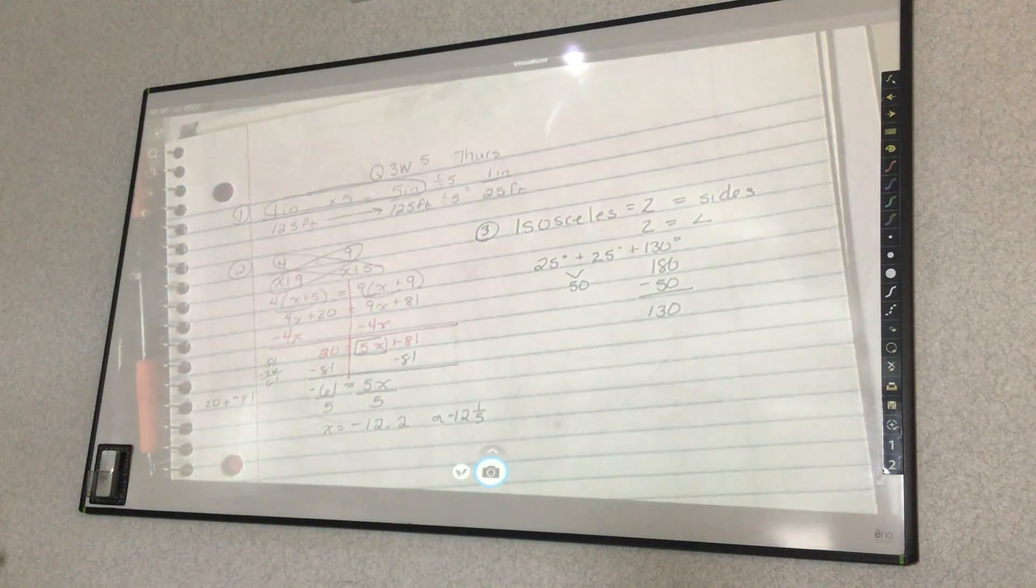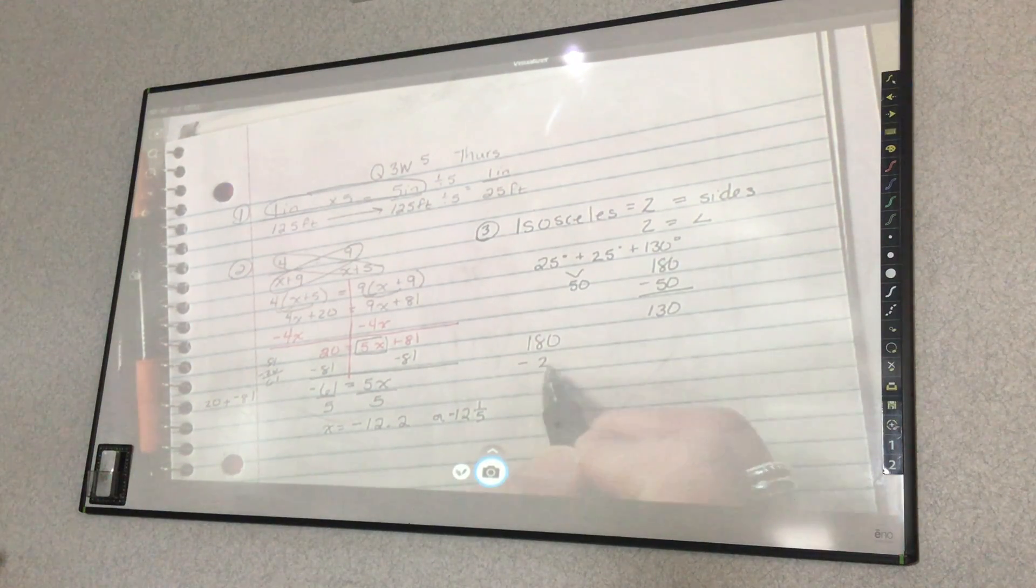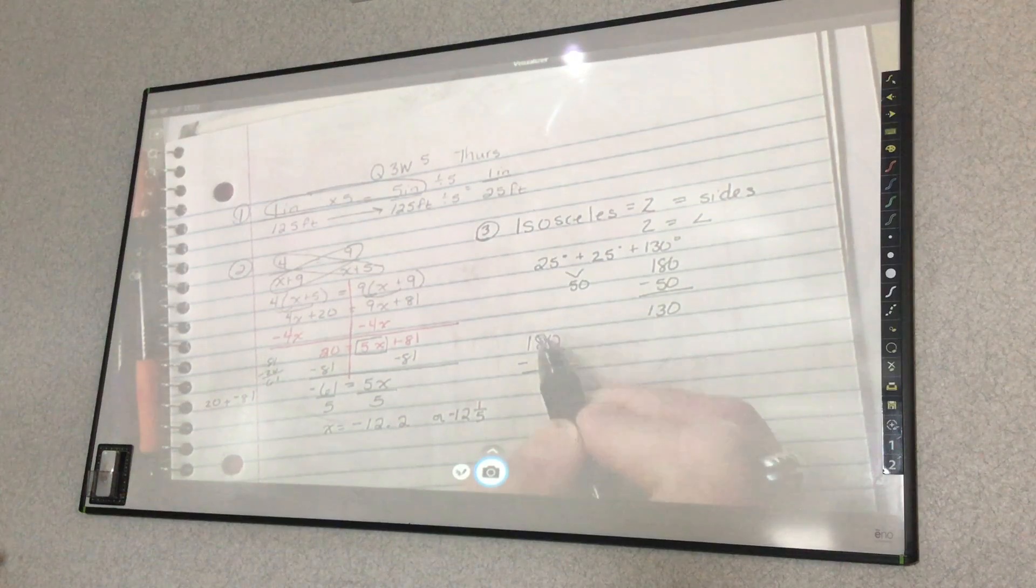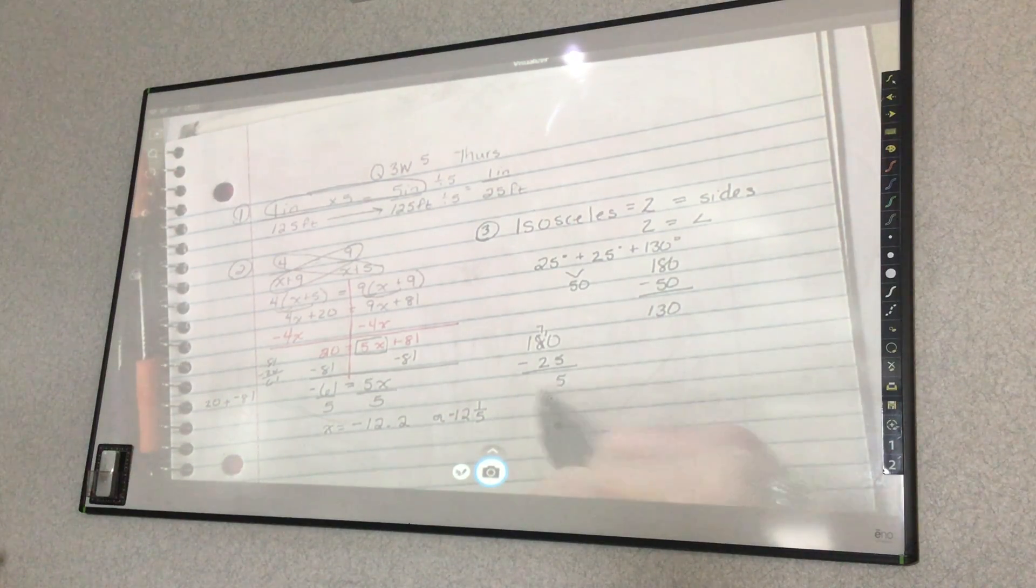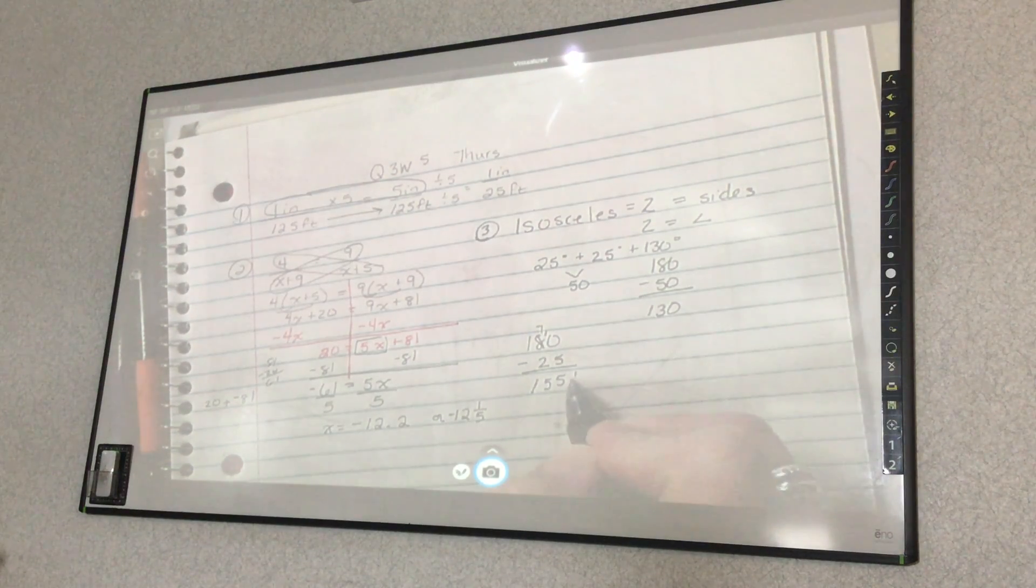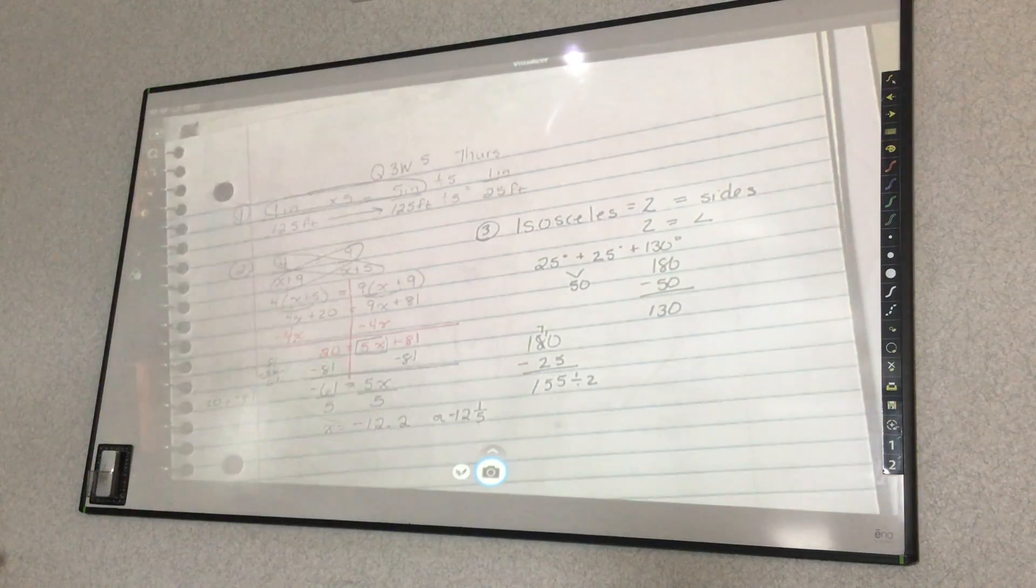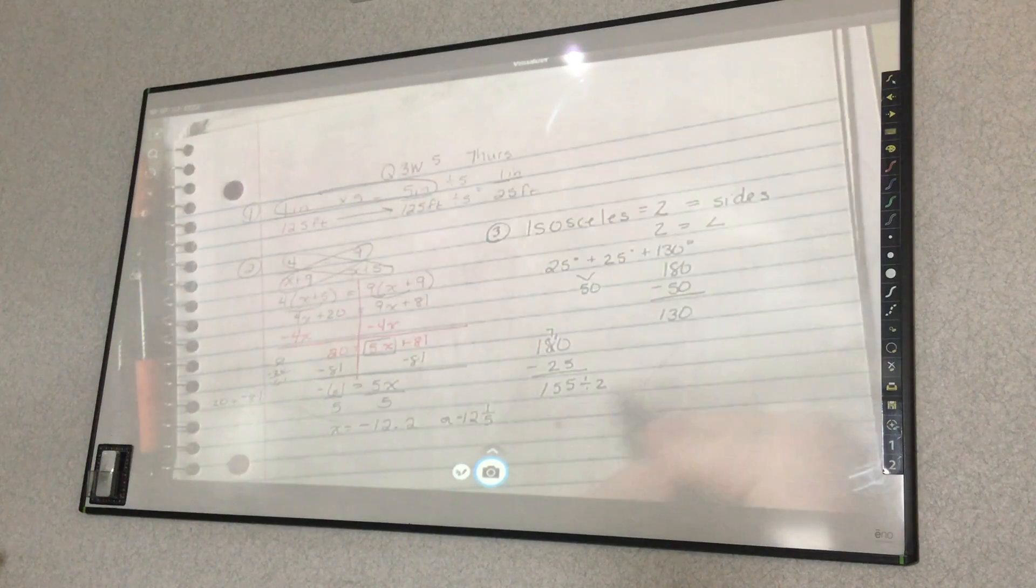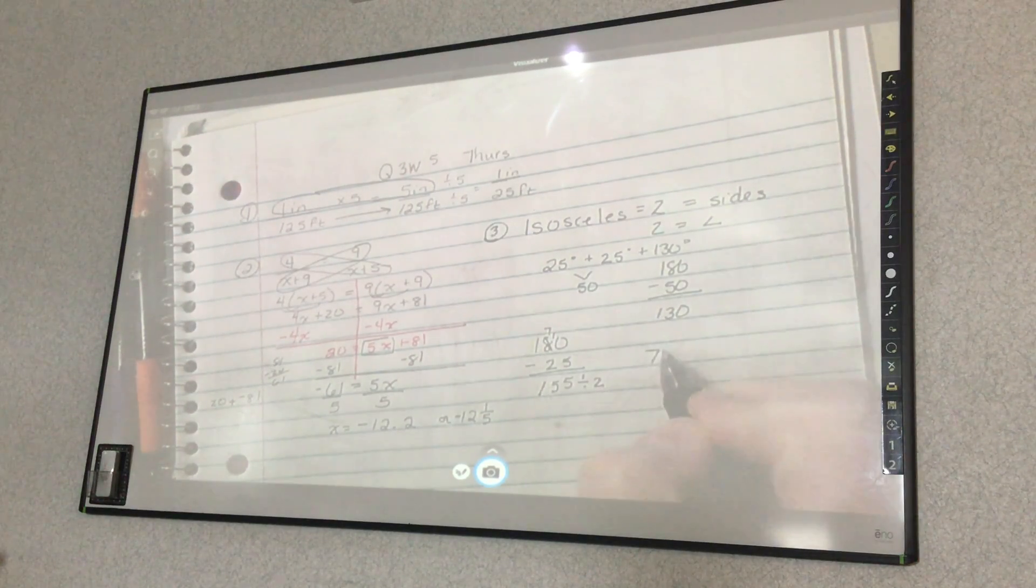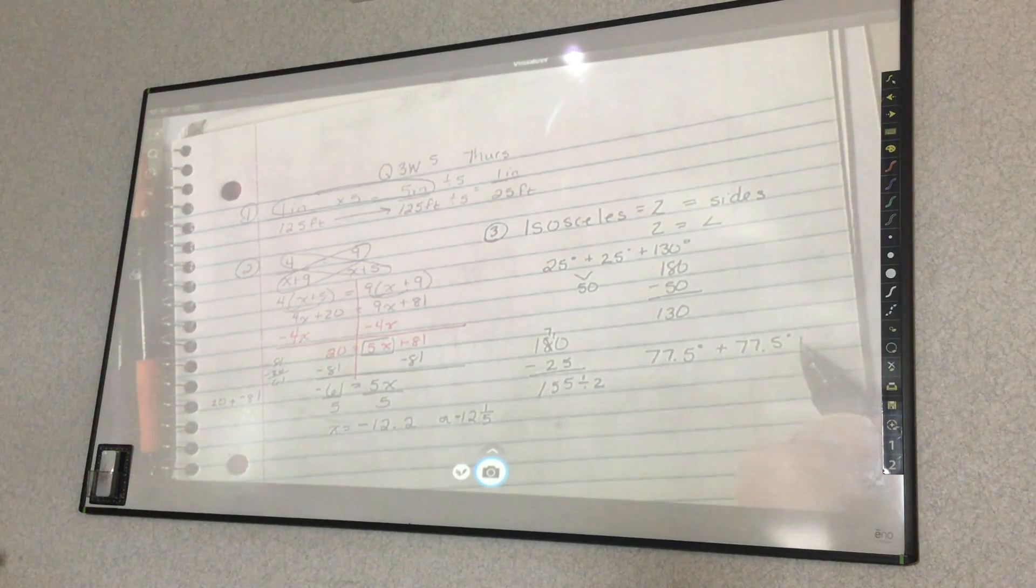Or I could have done 180 minus only one angle is 25. So that is 155. And then I would have to divide that by two. Divide that by two because they have to be the same. And the other measurements would be 77.5 degrees. So 77.5, 77.5 plus 25.